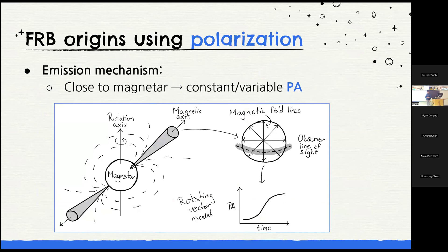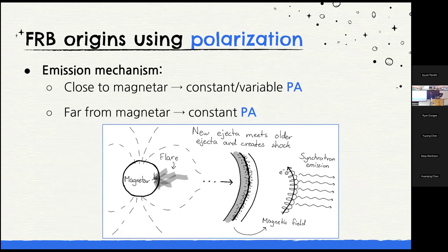What can polarization properties tell us about FRB origins? In a toy model where a magnetar is rotating, FRB emission originates in a narrow cone close to the magnetar surface — similar to a pulsar. As that beam sweeps past the observer, the geometry changes as a function of time, producing a rotating vector model polarization angle profile. In a different model, a magnetar flare or ejecta travels out, interacts with circumstellar material, creates a shock, and the FRB is produced in that shock. In that case, emission comes from a much larger region that doesn't change with respect to the observer over millisecond durations — so you'd expect a constant polarization angle as a function of time, as opposed to the varying profile of the near-surface model.